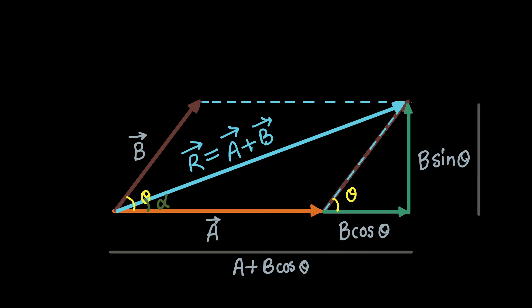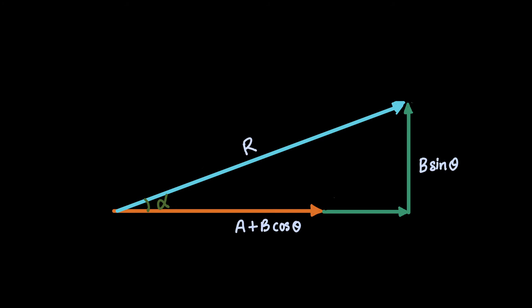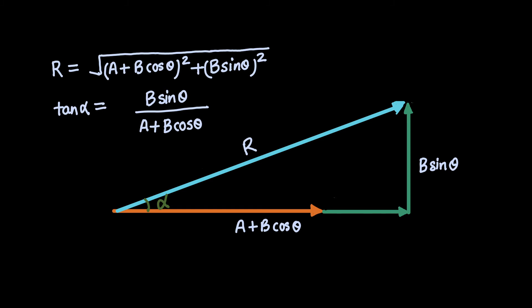If we just draw the geometry, it looks like this. The magnitude of the resultant vector will be the square root of (a plus b cos theta) square plus (b sin theta) square. We can calculate the angle alpha from here.